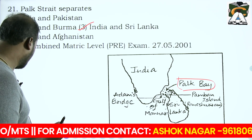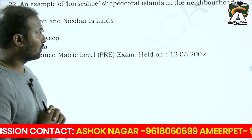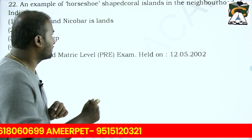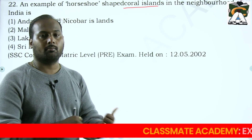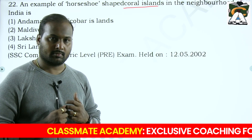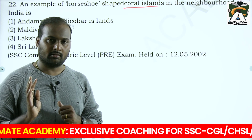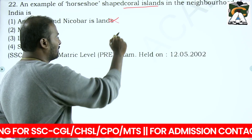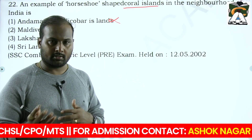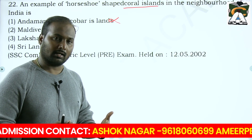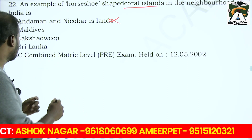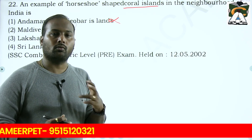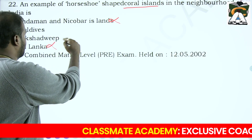'An example of horseshoe-shaped coral islands in the neighborhood of India is...' Coral islands are formed by animals belonging to the phylum Coelenterata, which are polyps. Andaman and Nicobar Islands are not coral islands - they are extensions of the Purvanchal or eastern Himalayas. Maldives is coral islands. Lakshadweep is also coral islands. Sri Lanka is not a coral island. So your answer is Lakshadweep.